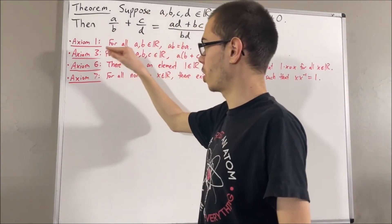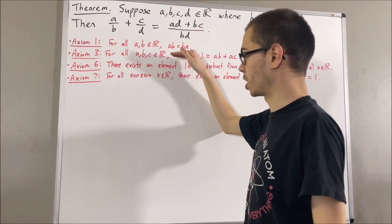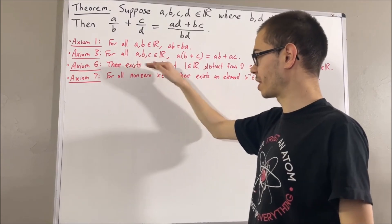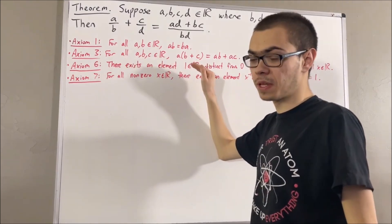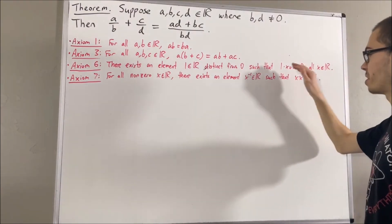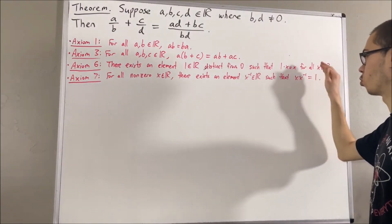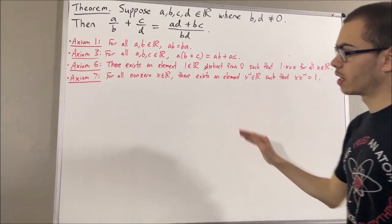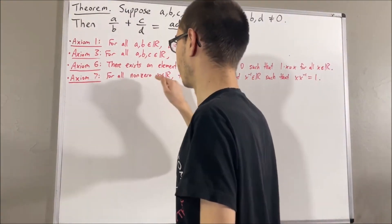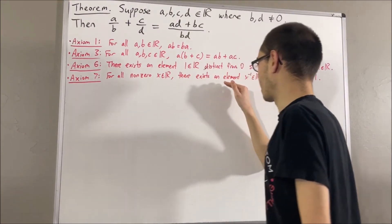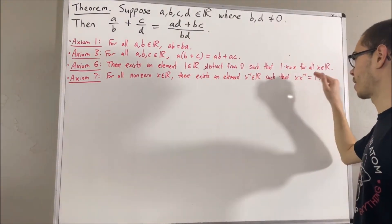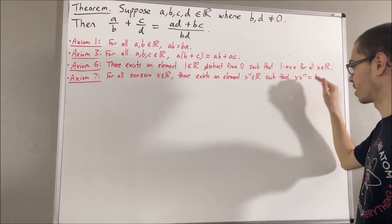Axioms 1 and 3 are just the commutative and distributive laws. Axiom 6 tells us that there exists a real number, which we call 1, that is distinct from 0 and has the property that 1 times x is equal to x for all real numbers x. And axiom 7 tells us, for all non-zero real numbers x, there exists a real number, which we call the reciprocal of x, that has the property that x times the reciprocal of x is equal to 1.